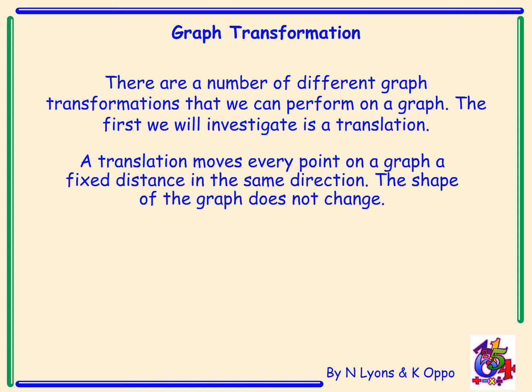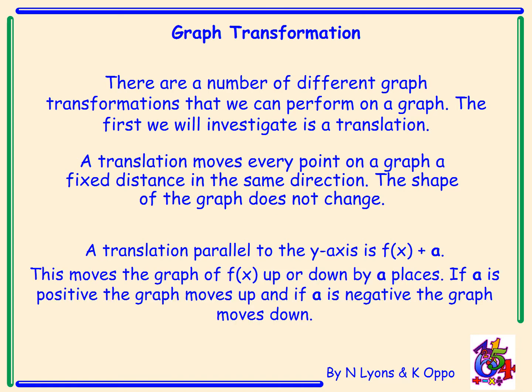A translation moves every point on a graph a fixed distance in the same direction. The shape of the graph does not change. A translation parallel to the y-axis is f(x) + a with a outside the bracket. This moves the graph of f(x) up or down by a places. If a is positive the graph moves up, and if a is negative the graph moves down.